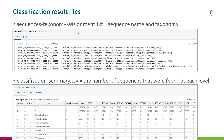Let's look at the result files. The sequences taxonomy assignment file essentially contains the sequence name and then the taxonomy assignment. Here in the parentheses you can see the confidence scores, and as you can see there are no numbers less than 80.